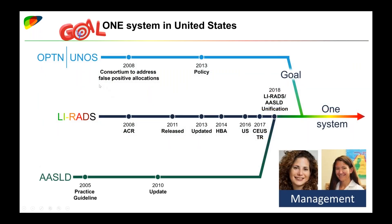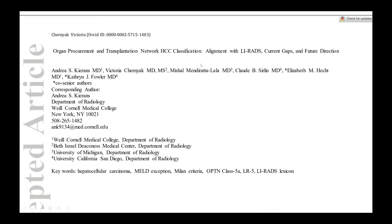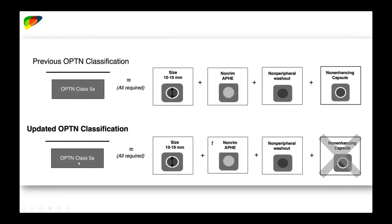AASLD and LIRADS have been unified since 2018, and our goal was to unify everything within the United States under one system. As of the end of this year, we have achieved that goal — largely thanks to Liz Hecht and Katie Fowler who led this effort. A paper accepted in Liver Transplantation outlines that OPTN criteria are now fully aligned with LIRADS, meaning OPTN class 5A is now completely identical to LIRADS-5, and you can safely use LIRADS in the transplant setting.